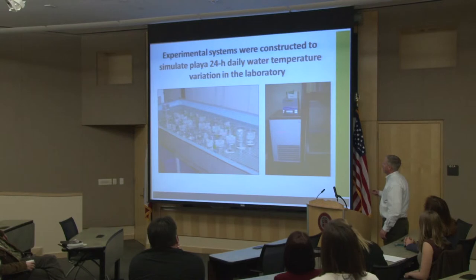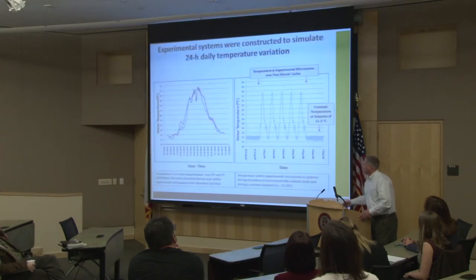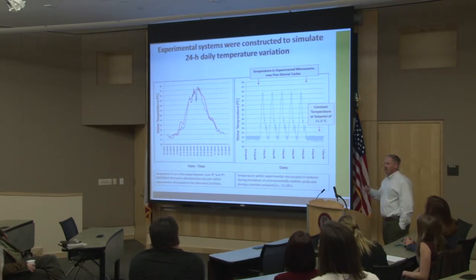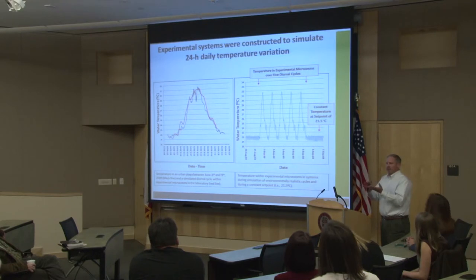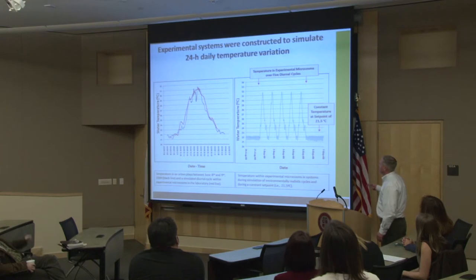We took field-collected data back to the lab and built water bath systems attached to a temperature controller to have very close control over temperature and simulate these patterns. On the left, the black line is field-collected data and the red line is what we simulate in the lab — we try to match these as closely as possible. On the right is what this looks like run out over several days for an exposure — a five-day cycle showing highs and lows, with about a 10-degree variation.